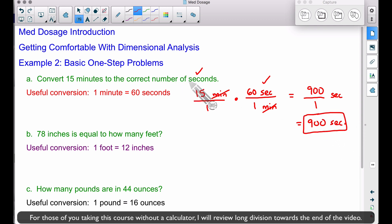Question B: 78 inches is equal to how many feet? Some of you may know to divide by 12, not multiply by 12, but I see people do the wrong thing time and time again. That's where dimensional analysis can really help you. We have 78 inches, so let's put 78 inches over 1. Let's use our helpful conversion: 1 foot equals 12 inches.